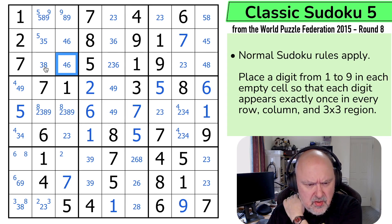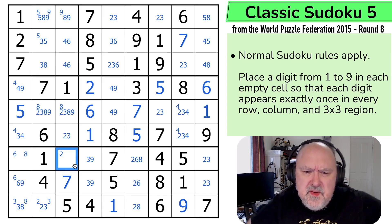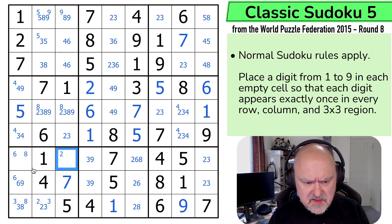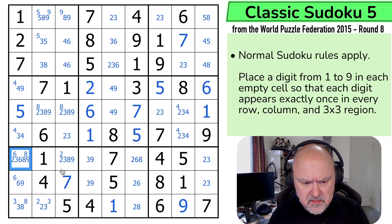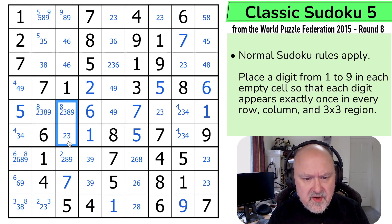I've almost pencil marked everything in the grid. Three is in one of those two in this column. I can't put a three here because of the two, three pair. This is a four, six pair and I can't put a three here because of the X wing on threes here. Three is in one of those two, which means that's the four, that's the nine.